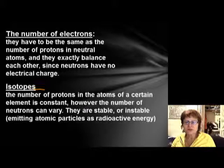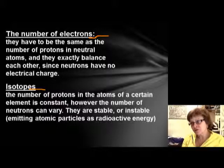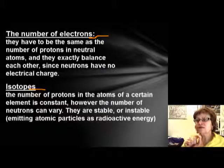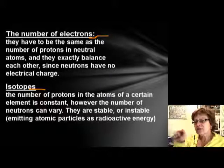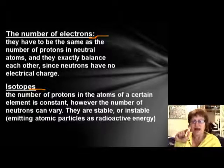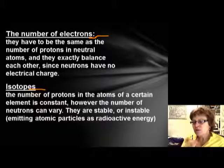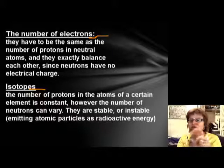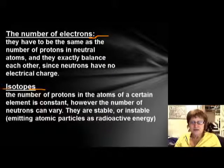Before getting to isotopes, note that atoms are normally neutral, which means the number of protons equals the number of electrons. So the atomic number not only gives you the number of protons but also the number of electrons in a neutral atom.